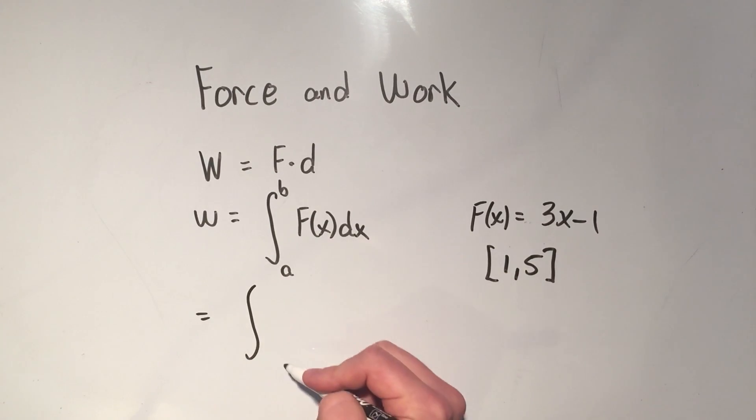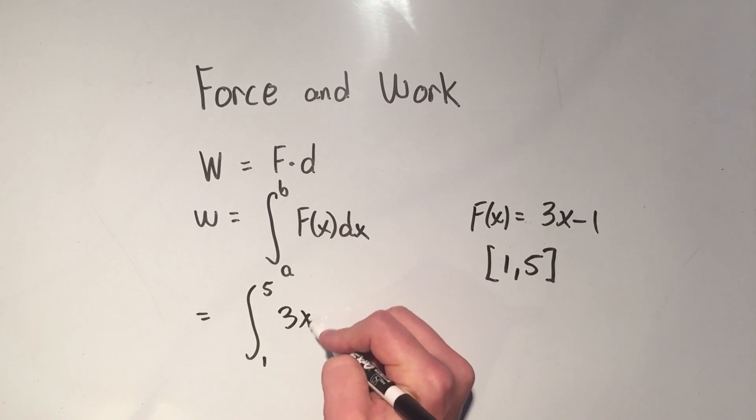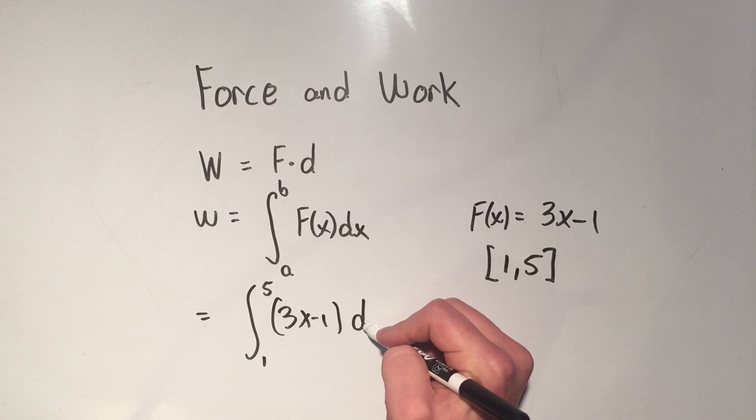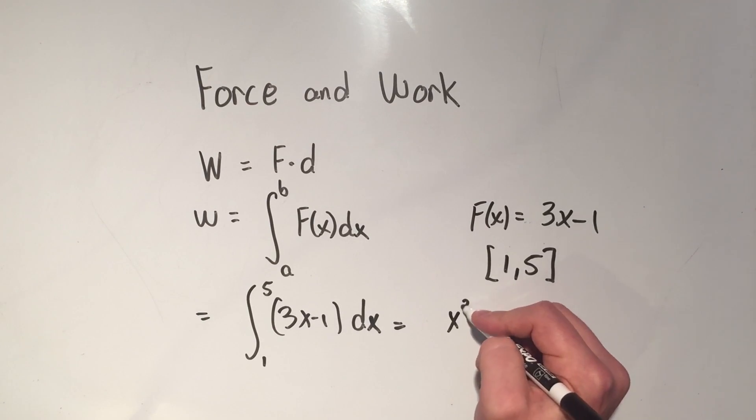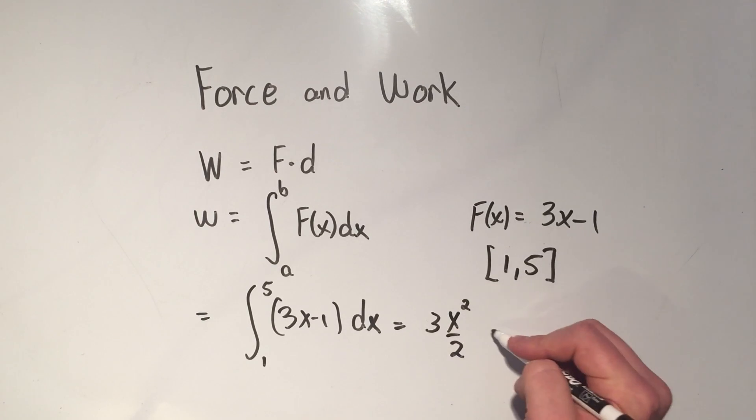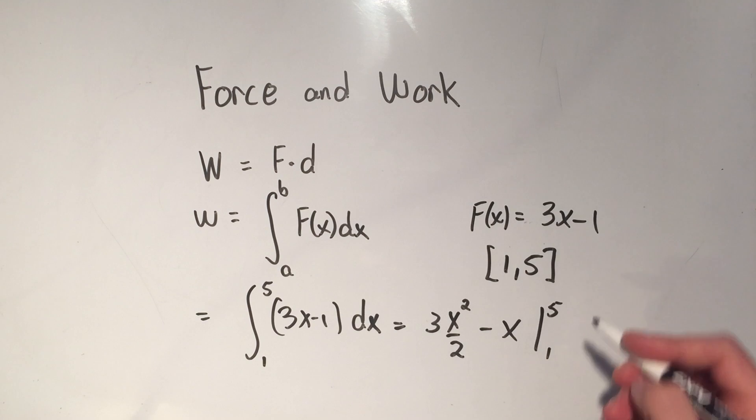We're just going to do that really simple definite integral from 1 to 5, integrating 3x minus 1 dx. Now if I take the antiderivative of this, add 1 to the power, divide by the new power, the antiderivative of minus 1 is minus x. And I have to evaluate from 1 to 5.